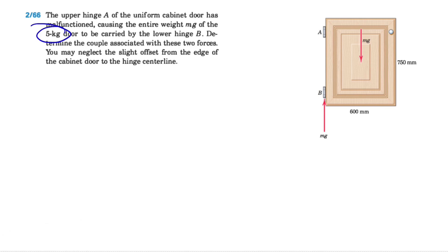We have the mass of the door and from that we can find the weight, which we know is equal to mass times acceleration of gravity, or g, which is 9.81 meters per second squared on Earth.